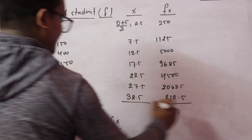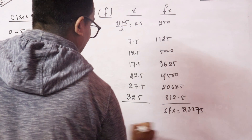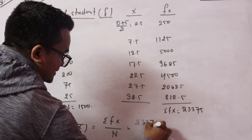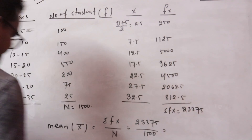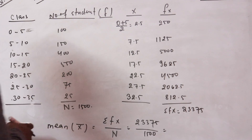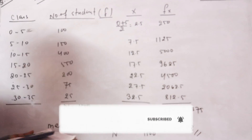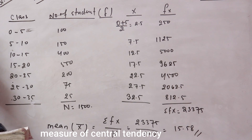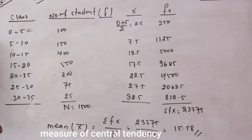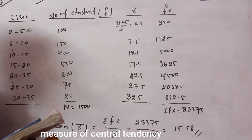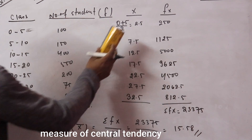Sum of fx = 23,375. Sum of f = 1,500. Mean = 23,375 divided by 1,500 = 15.58. That is the mean. Now for the second part — median.